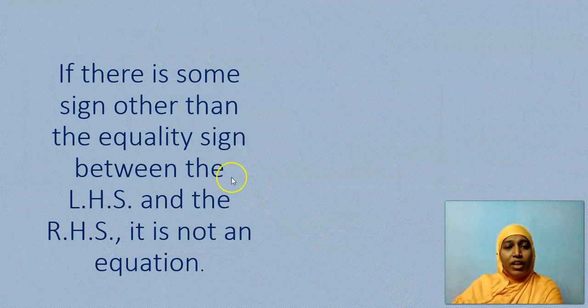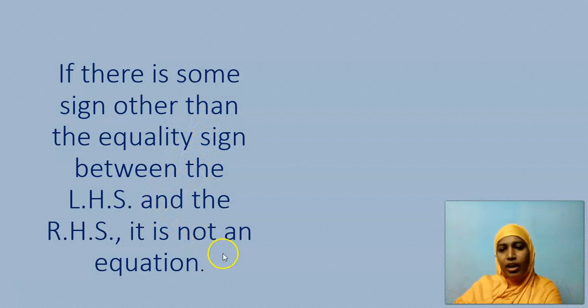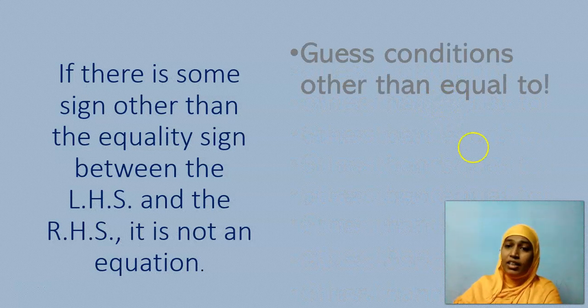Now if there is some other sign other than that equality, is it an equation? No, it is not an equation. Come on children, now guess some situation where we will not have equality sign and we will have some other sign. Guess conditions other than equal to. Do we have any other conditions other than equal to?